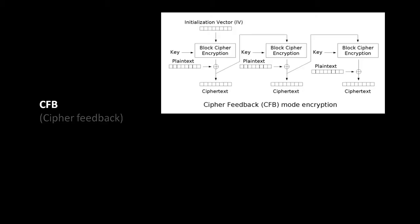Very strangely, in this mode we're not actually running our plaintext through the block cipher. But of course what comes out of the block cipher will have high entropy — it'll be very random. So just like in a one-time pad or a stream cipher where we have random data which we XOR with our plaintext to get our ciphertext, we're doing the same thing here. The block cipher in this mode is being used as a pseudo-random number generator, which is one reason the line between block ciphers and stream ciphers isn't always clearly defined.